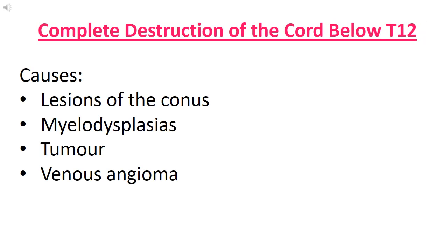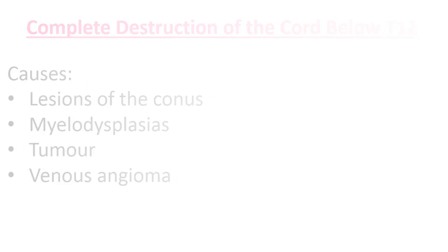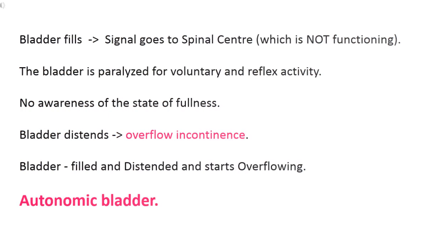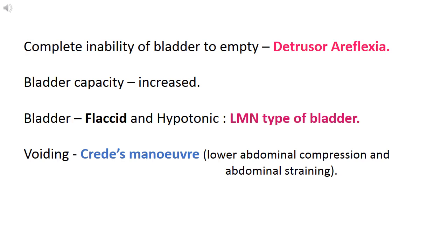Next is complete destruction of cord below T12 level. The causes include lesion of the conus, myelodysplasia, tumour and venous angioma. When bladder fills, signal goes to the spinal cord which is not functioning. The bladder is paralysed for voluntary and reflex activity. There is no awareness of state of fullness; bladder distends as urine accumulates until there is overflow incontinence. Bladder will be distended and filled and starts overflowing. This type of bladder is known as autonomic bladder. There is complete inability of the bladder to empty, which is known as detrusor areflexia.